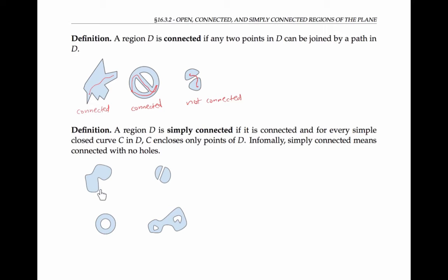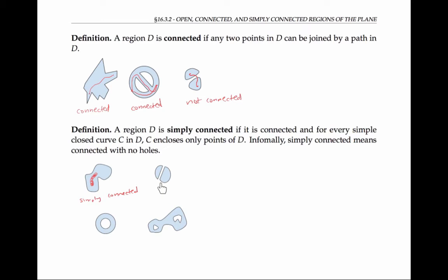This region here is simply connected, because first of all it's connected, and second of all, if I draw any simple closed curve that lies in the region, it's going to contain only points in the region. This next region to the right, though, is not considered simply connected, simply because it's not connected — it has two components.